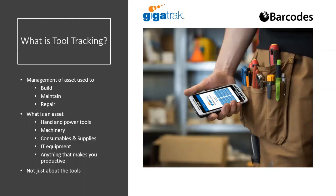Tool tracking is the management of an asset used to generally build something, maintain something, or repair a process. Typical tools tracked include hand tools, power tools, sawzalls, benders, and a lot of power equipment. There's also machinery from a manufacturing process side, and in the case of machinery, those items generally have consumables like drill bits, cutting wheels, and grinding wheels that need to be managed.